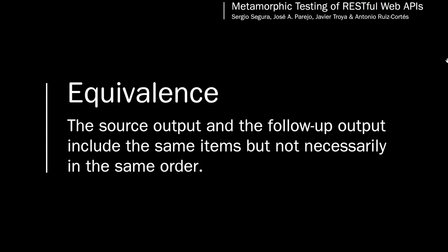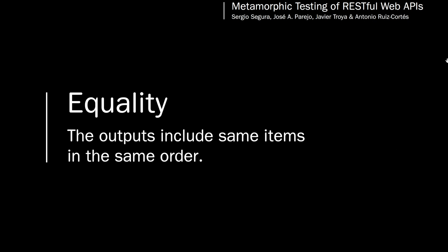Equivalence: a relation where the source output and the follow-up output are equivalent — they include the same items, although not necessarily in the same order. Equality: a relation where the output includes the same items and in the same order.